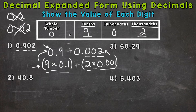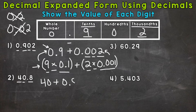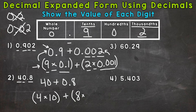On to number two, where we do have a whole number. We need to start with the value of that four, which is 40. Plus, we can skip the zero in the ones place, so we move to the eight, which has a value of eight tenths, so we write out eight tenths. Using the parentheses method: we start with a four — it's in the tens place, so four times ten, which equals 40. Plus we have an eight in the tenths.